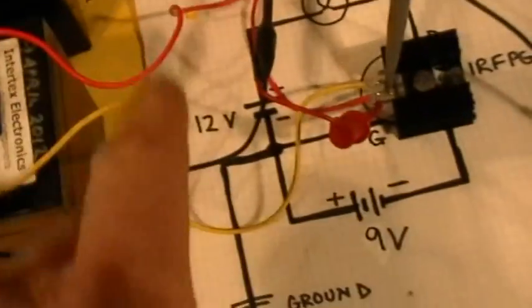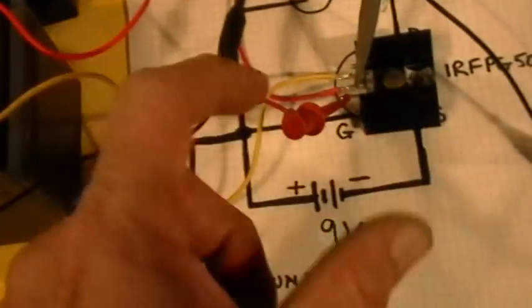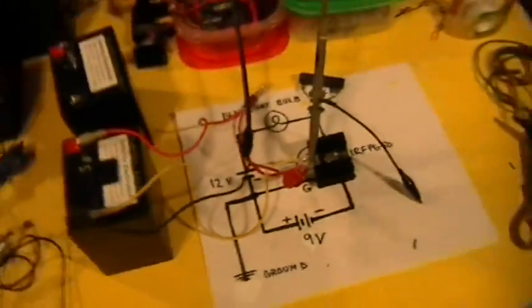Okay, so now the function generator is substituting for the battery, and I've selected a negative drive from the function generator because that's what produces the oscillations in the Q2s.